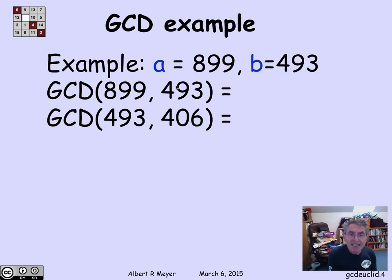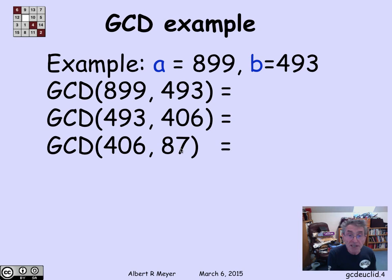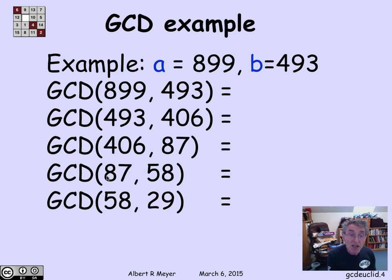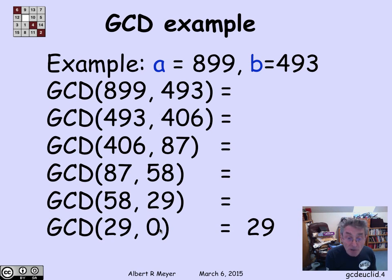So that means that 899 and 493 have the same GCD as 493 and 406. I can divide 493 by 406. I get a quotient of 0 and a remainder of 87. Dividing 406 by 87, I get that 87 and 58 have the same GCD. Dividing 87 by 58, I get that 58 and 29 have the same GCD. And now I win, because when I divide 58 by 29, I get a remainder of 0.